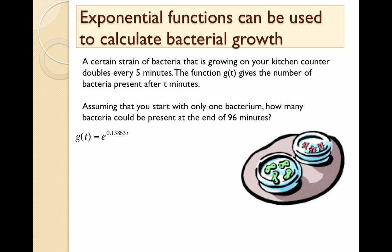Again, g(t) gives you the growth rate for this particular bacteria. It's an exponential function. To figure out how many we have after 96 minutes, we're going to plug in 96 for t. Try this on your calculator: 602,248 and then some bacteria. So in 96 minutes, you'll have 602,249 bacteria sitting on your kitchen counter.